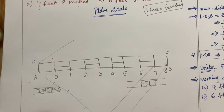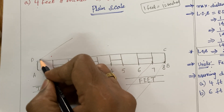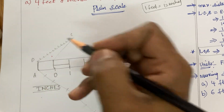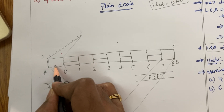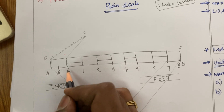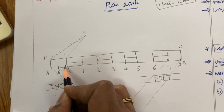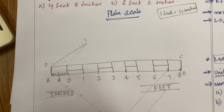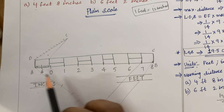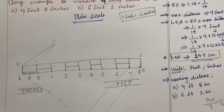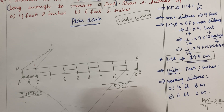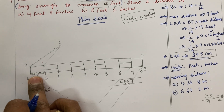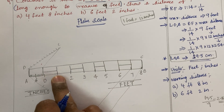Since I cannot mark 2.16 exactly, I need to use the division of a line concept again. From D, draw a line at less than 45 degrees, then divide it into 12 equal divisions. The last division is joined back, and using the drafter parallel, divide the box into 12 equal parts. For your understanding: 1, 2, 3, 4, 5, 6, 7, 8, 9, 10, 11, 12. This gives 1 foot divided into 12 inches. Every box on the feet scale also contains 12 inches within it.